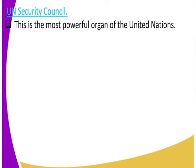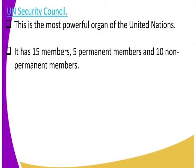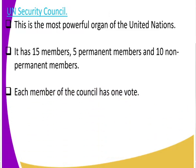We have permanent members and non-permanent members. The UN Security Council has 15 members in total. Of these 15 members, five are permanent members and ten are non-permanent members. So we have 15 members: 5 permanent and 10 non-permanent members.